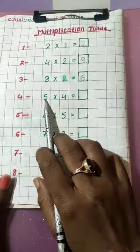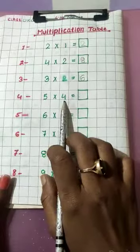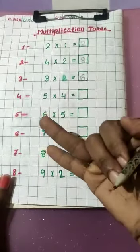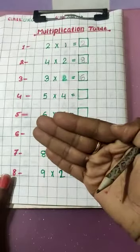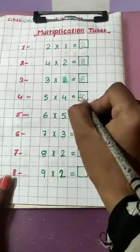Now, next one. 5 into 4. 5 ka table 4 times pardhayenge. 5 once a 5, 5 two is a 10, 5 three is a 15, 5 four is a 20. Write here, 20.